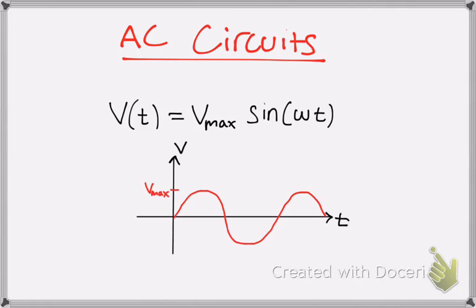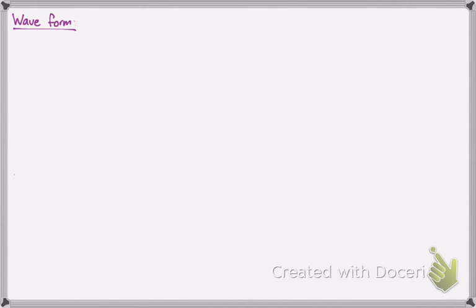But when dealing with stuff in circuits, typically in electrical engineering and in physics, you will see these expressions actually in terms of cosine. So what's the difference between sine and cosine? Well, it's shifted by 90 degrees, or there's a phase shift. Instead of starting at the origin at 0,0, you start at the maximum, or at 90 degrees. So that is where this waveform comes from.